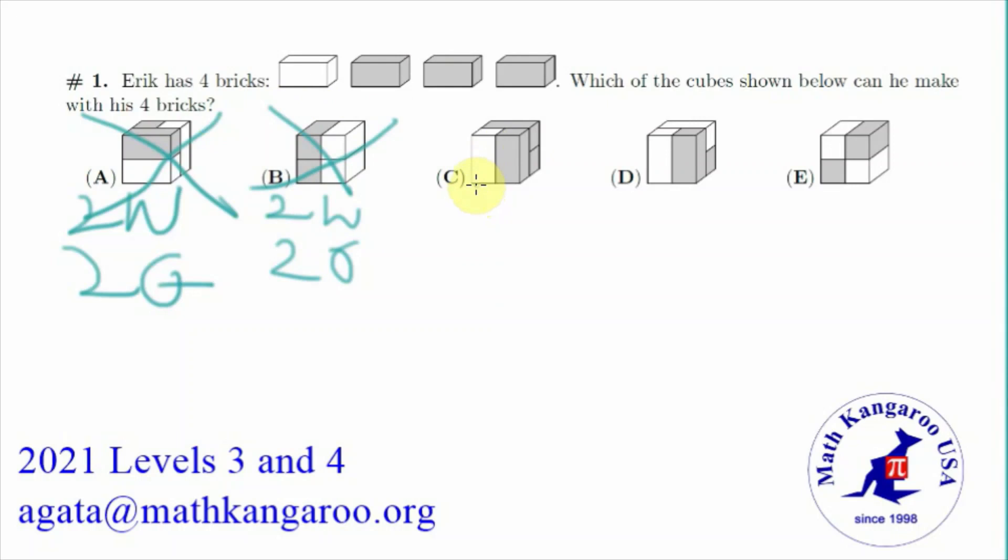If we look at C, we have 1 white and 3 grey. This could be our answer because we have 1 white. He uses 1 white and 3 grey. So he can make this one. So we are going to circle it.